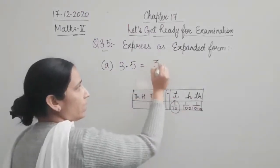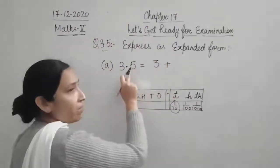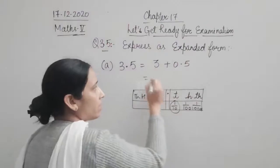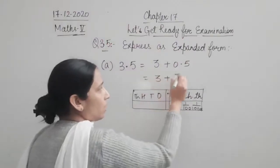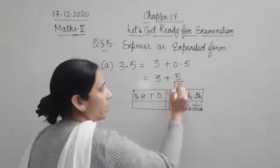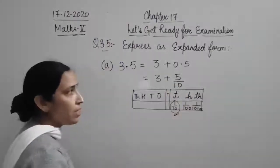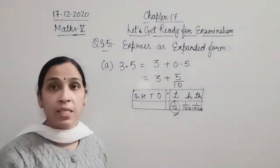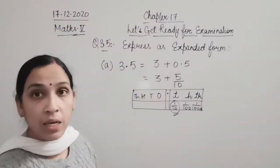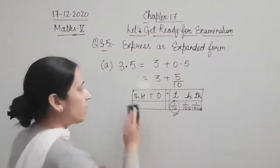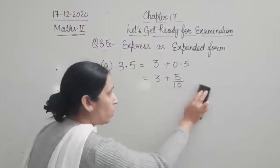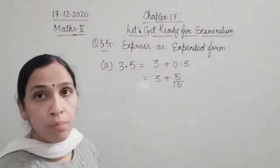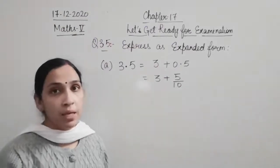For example, 3.5 in expanded form: 3 plus 0.5. Now 0.5 can also be written as 5/10. So 3.5 becomes 3 plus 5/10. The tenths place is divided by 10, the hundredths place is divided by 100. This is the expanded form of a decimal number.